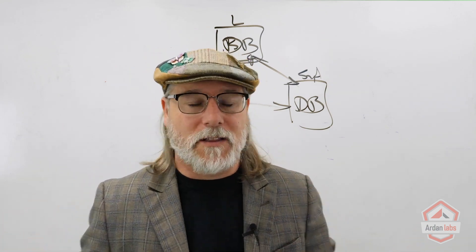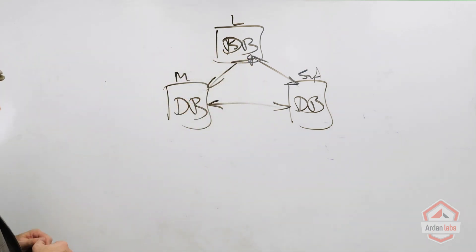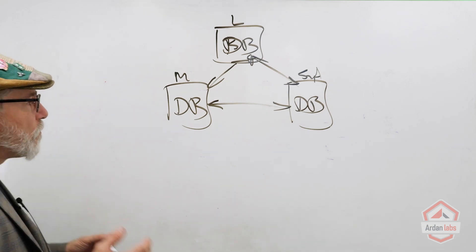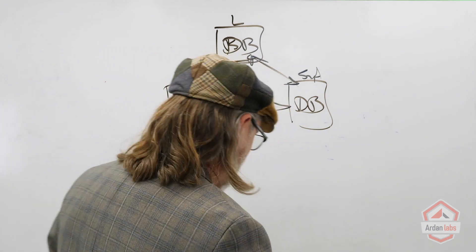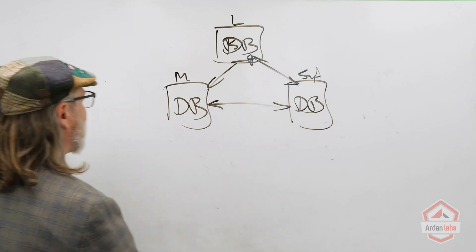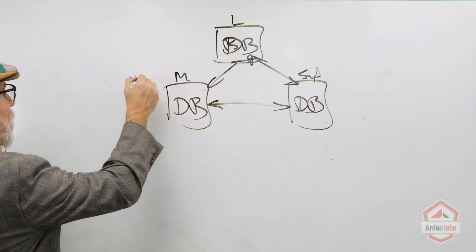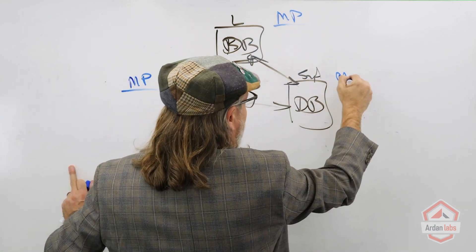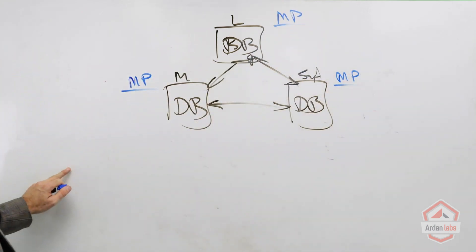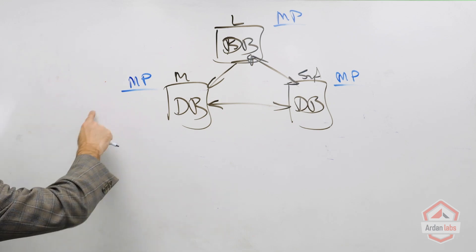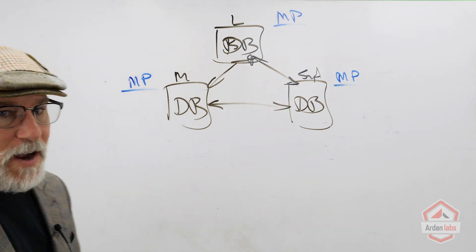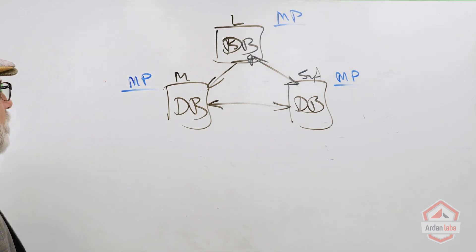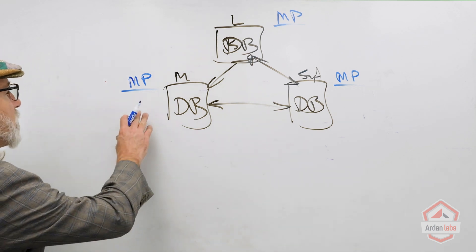Every once in a while a new package is going to come into the system. To get some higher throughput, we're going to add another data structure here called the mempool. Each one of these databases will maintain what we're going to call a memory pool. When the CLI tool identifies a new package, it's going to just cache that new package.